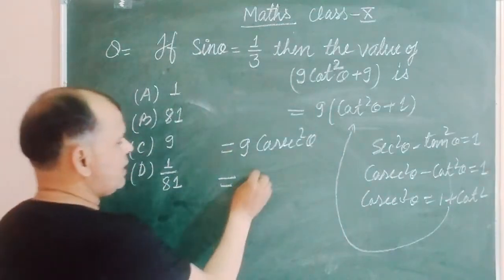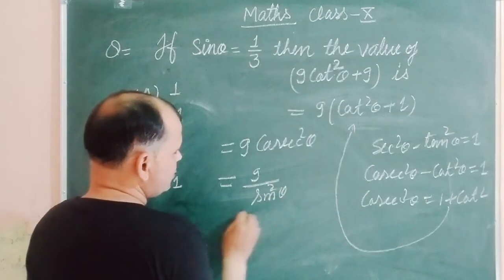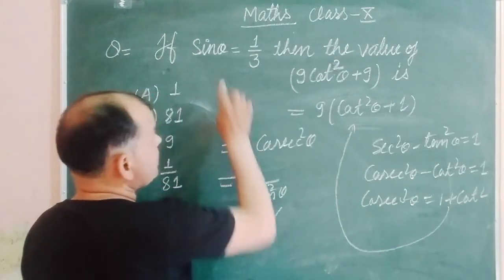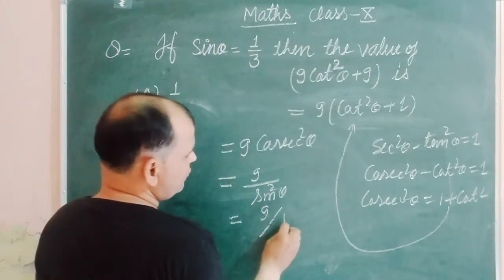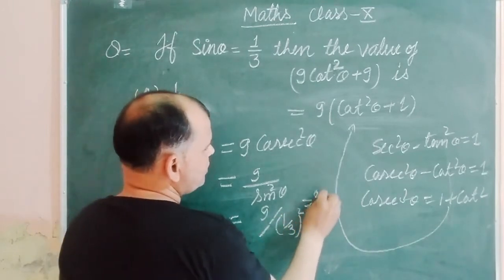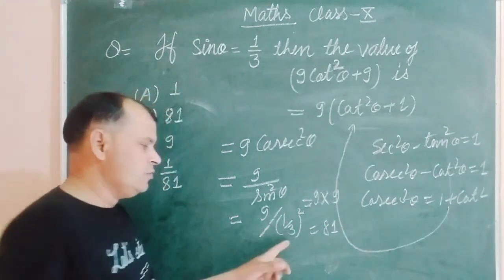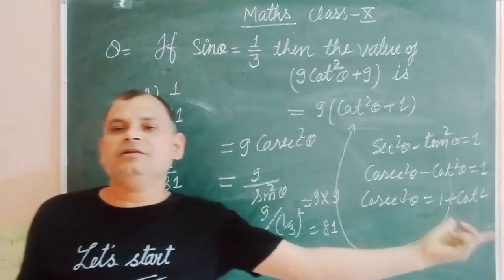And we write cosec²θ as 1/sin²θ. So 9/sin²θ, and sin θ is given as 1/3, so (1/3)². Therefore 9 × 9 = 81, because 9 is in the numerator.